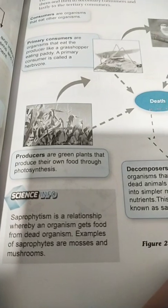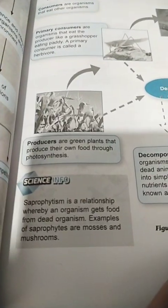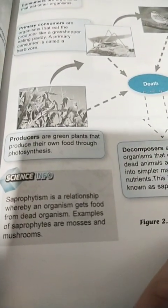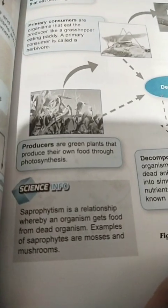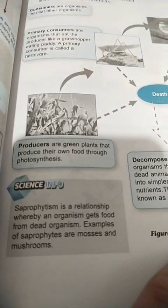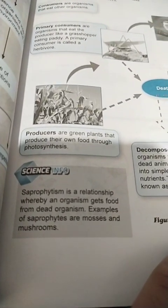Saprotrophism is a relationship whereby an organism gets food from another organism. Examples of saprotrophism are mosses and mushrooms.